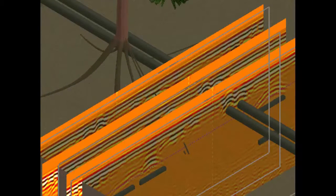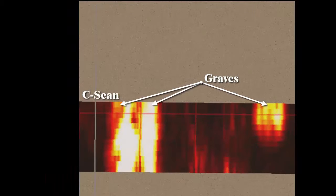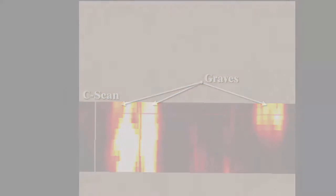Multiple parallel B-scans are put together to form a C-scan. The C-scan is a horizontal slice in the ground which provides a horizontal location of buried objects.